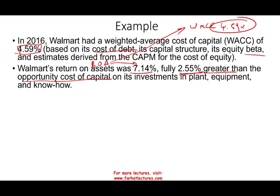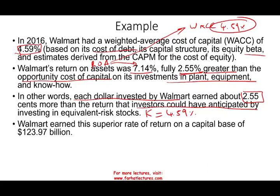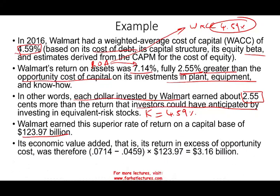What do we mean by the opportunity cost? If you're an investor, you have a required rate of return — which for Walmart happens to be 4.59%, which is WACC. Walmart is earning 7.14% on their invested assets — property, plant, and equipment, and know-how. In other words, each dollar invested by Walmart earned 2.55 cents more than the return that the investor could have anticipated by investing in equivalent-risk stocks. Therefore, if Walmart has assets of approximately $124 billion, their EVA equals $3.16 billion.